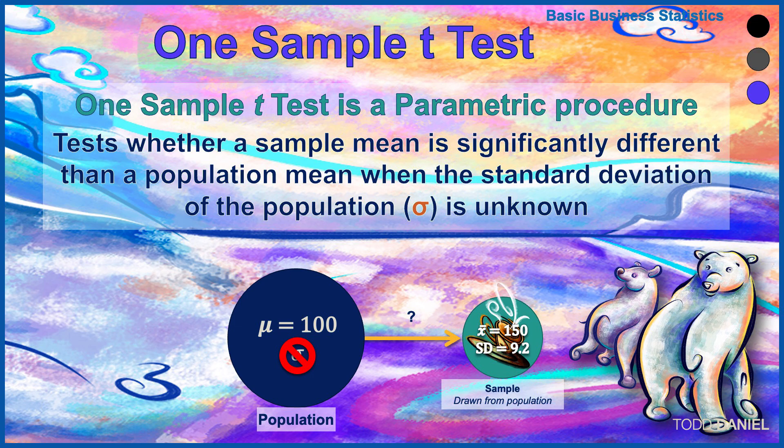Using our example with the polar bears, the population of polar bears walks 100 miles per week, but we don't know the population standard deviation. We have randomly selected a sample of polar bears that were given caffeine, and at the end of this study they walked an average of 150 miles per week. We can use what we learn from the sample standard deviation to estimate the population standard deviation.